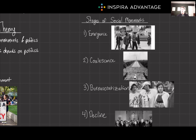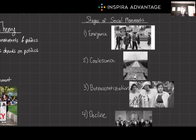Now that we know some of the underlying theories behind social movements, let's get into the vocab of social movements you need to know for the MCAT. Social movements evolve through stages: emergence, as they form; coalescence, as they gain public visibility; bureaucratization, as they establish structure; and decline, when they achieve their goals, fail, or become institutionalized. Each stage is crucial for understanding a movement's life cycle.